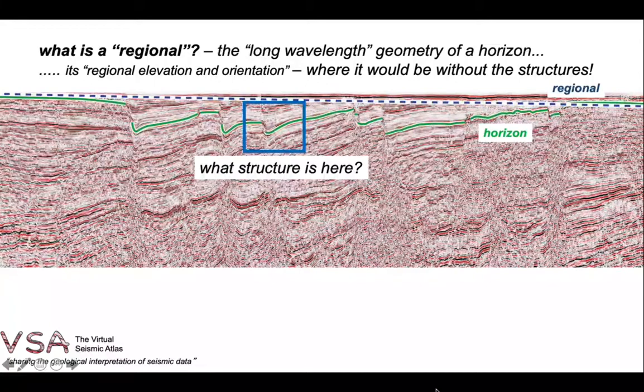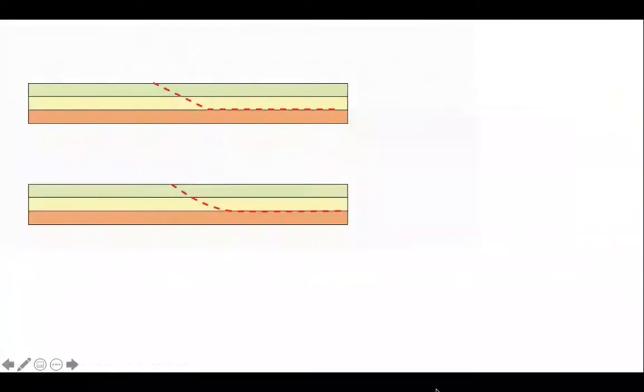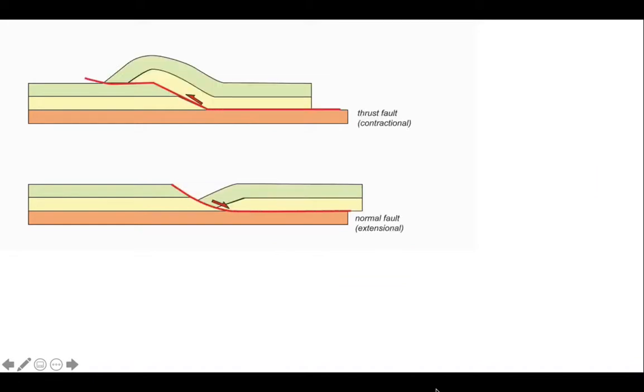So let's step back and look at a few simple cartoons. Here we have some strata ready to fault. In the top diagram, we push the hanging wall up, creating a thrust fault. And in the lower one, we've done the opposite and moved the hanging wall down to create a normal fault.